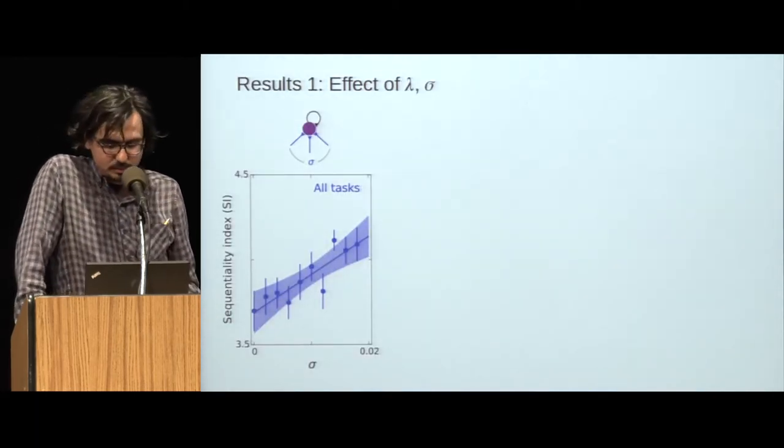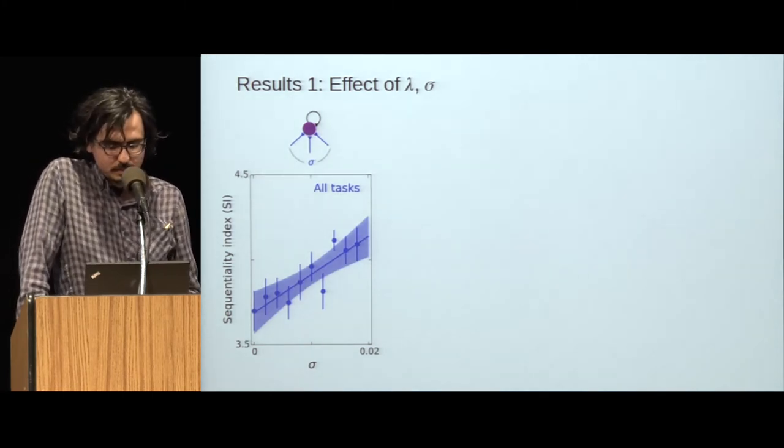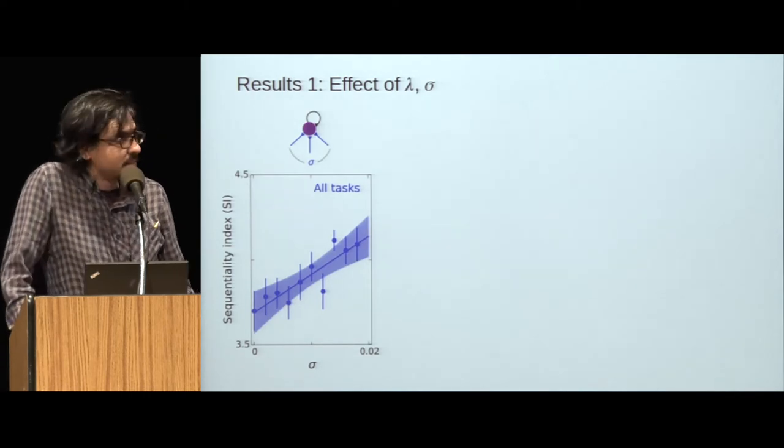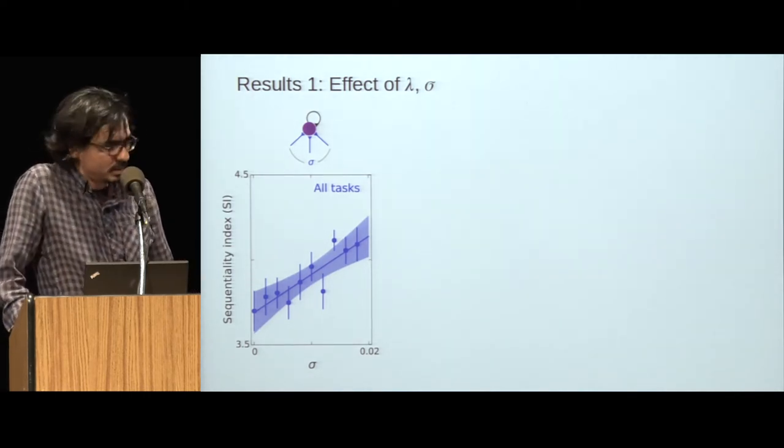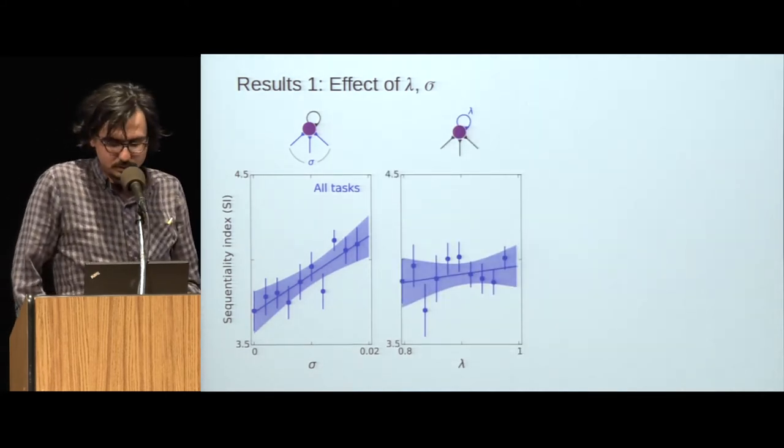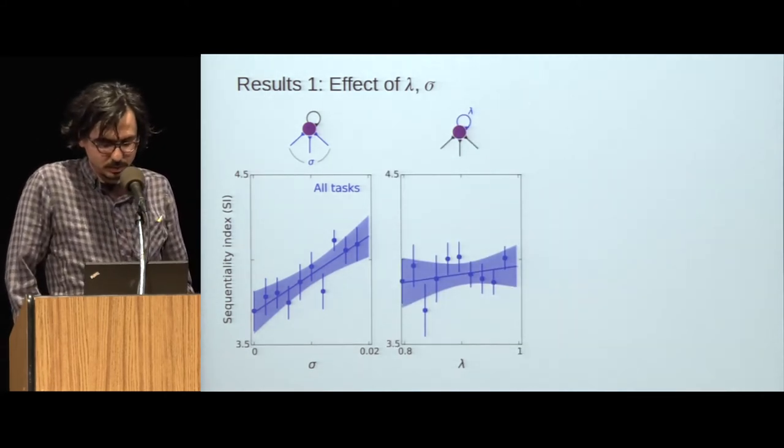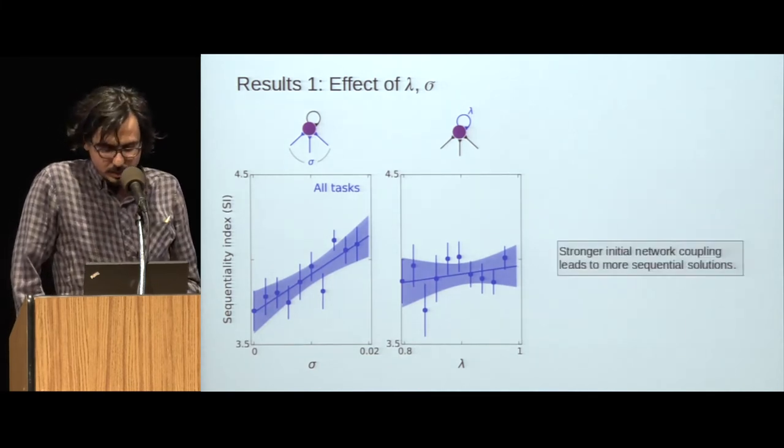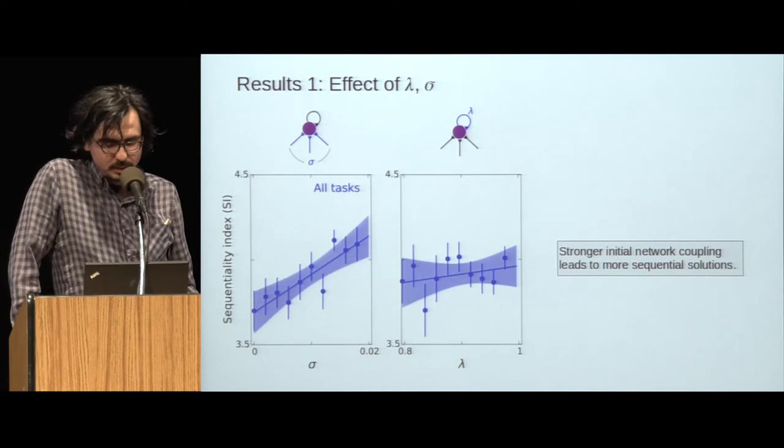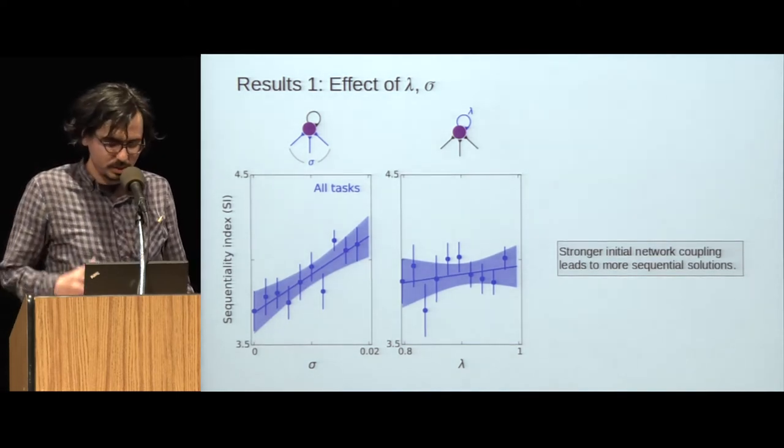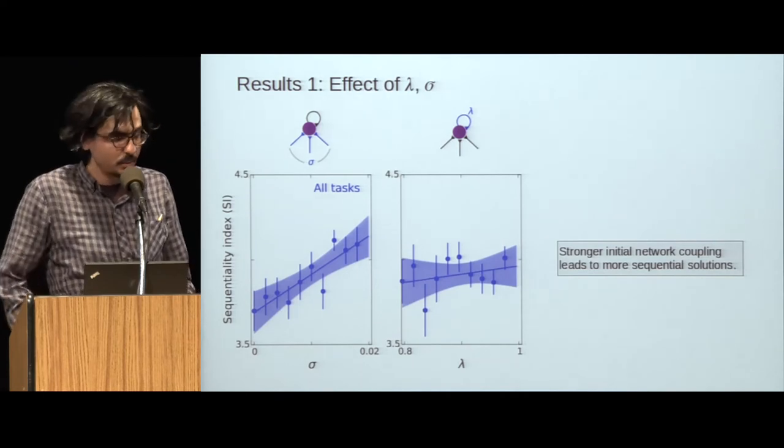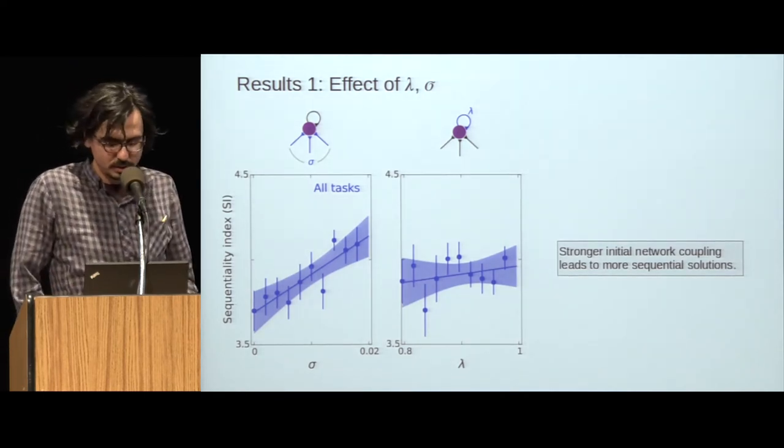Now the results. First, let's look at the effect of the hyperparameters lambda and sigma on the sequentiality of the solutions. We find a significant increase in sequentiality with sigma, the initial network coupling, but no effect of lambda on the sequentiality. We think that this is because stronger random coupling between the units introduces these higher frequency oscillatory dynamics in the network, which turns out to be beneficial for the generation of sequences.